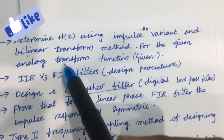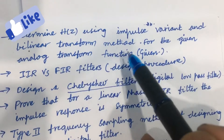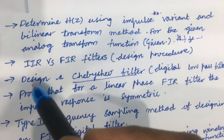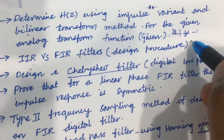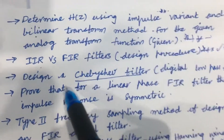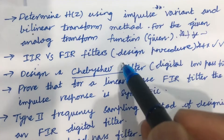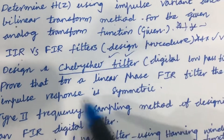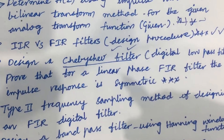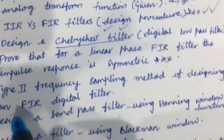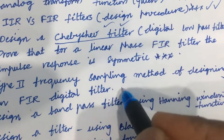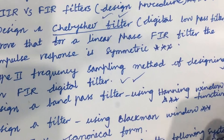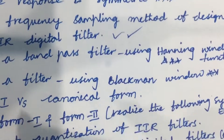The remaining unit covers determining H(z) using impulse invariant or bilinear transform method for a given analog transfer function — also a gunshot question. From the third unit, you are going to get 30 marks. The differences between IIR and FIR filters and the design procedure of the FIR filter are asked many times. Design a Chebyshev digital low-pass filter is also a very important gunshot question. Prove that for a linear phase FIR filter the impulse response is symmetric — also asked many times. Type-II frequency sampling method of designing FIR digital filters, and design a band-pass filter using the Hanning window function — questions may come from Hanning window or Blackman window, and you will be getting any one from these two concepts.